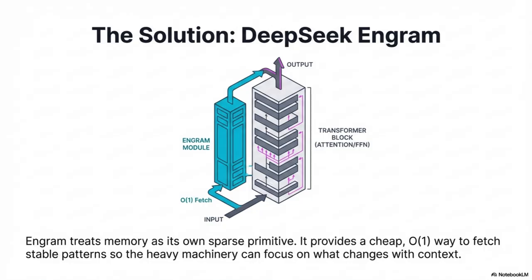Let's talk about how it actually works — they call it the pocket notebook. Enneagram is essentially a giant internal lookup table: a massive collection of learned embeddings. It's parametric, learned during training, but you access it with a hash key — not by passing sequential information through layers. It's part of the model, but it bypasses the main sequential compute engine.